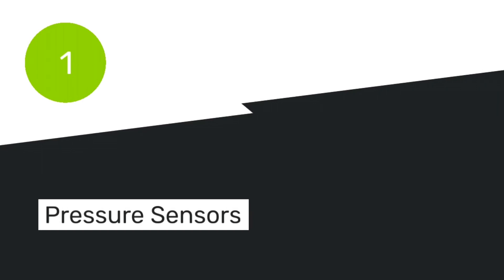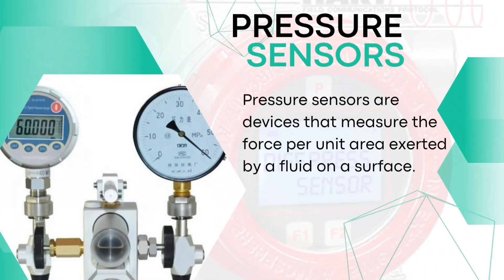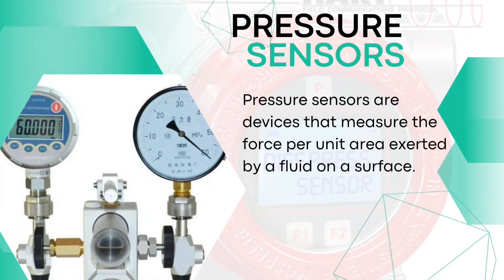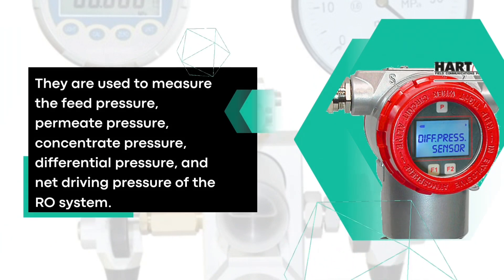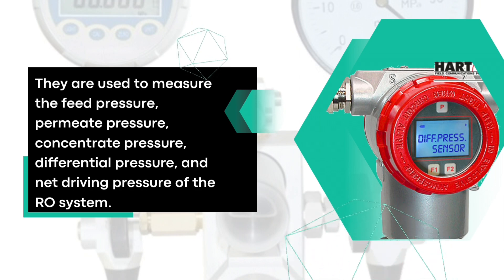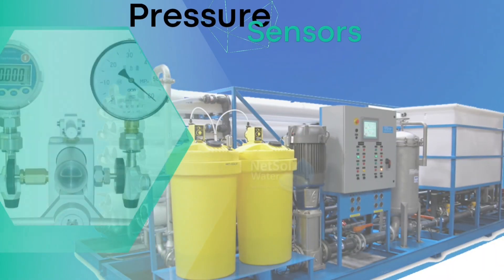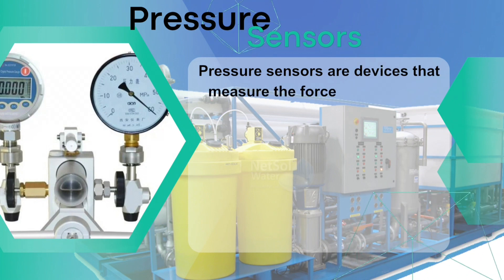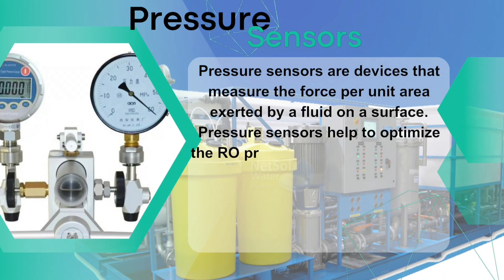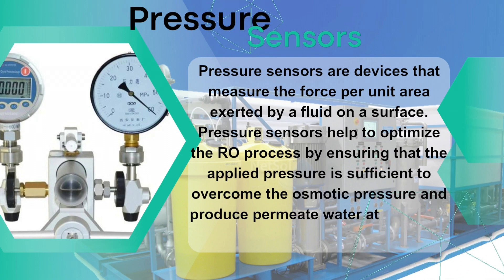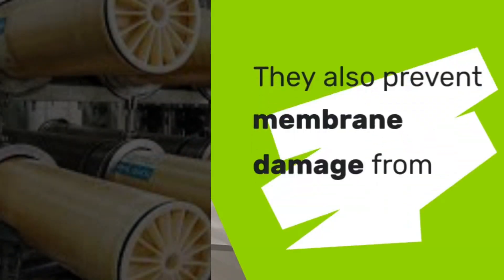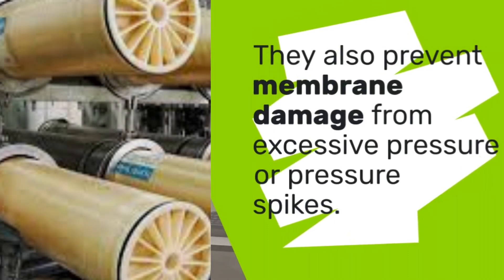Pressure sensors are devices that measure the force per unit area exerted by a fluid on a surface. They are used to measure the feed pressure, permeate pressure, concentrate pressure, differential pressure, and net driving pressure of the RO system. Pressure sensors help to optimize the RO process by ensuring that the applied pressure is sufficient to overcome the osmotic pressure and produce permeate water at a desired recovery rate. They also help to prevent damage to the membrane by avoiding excessive pressure or pressure spikes.